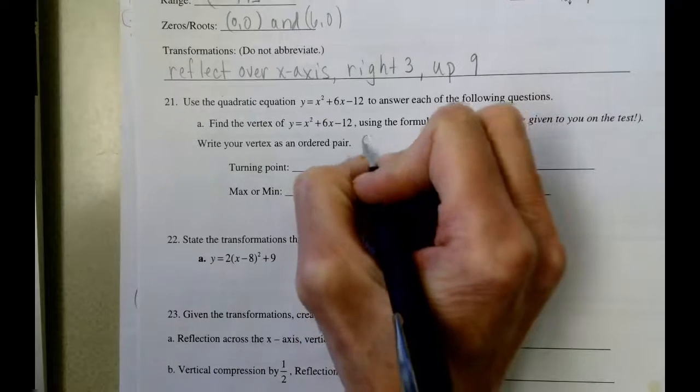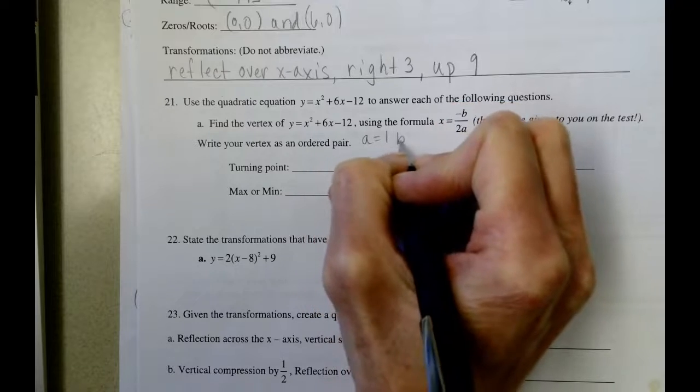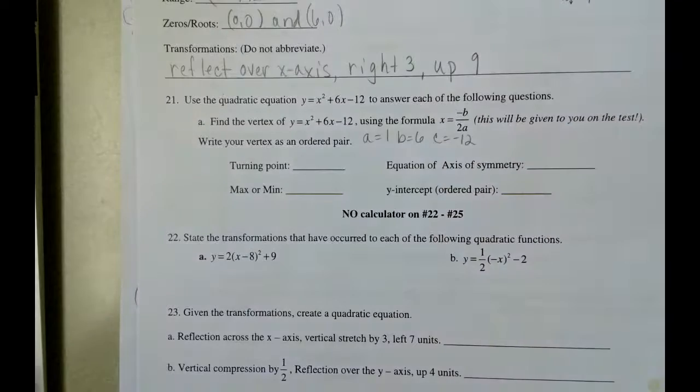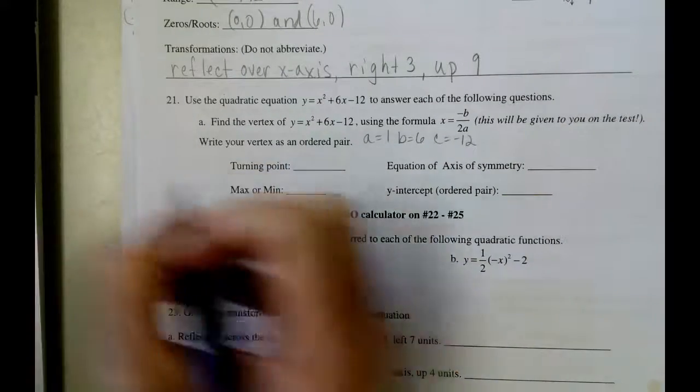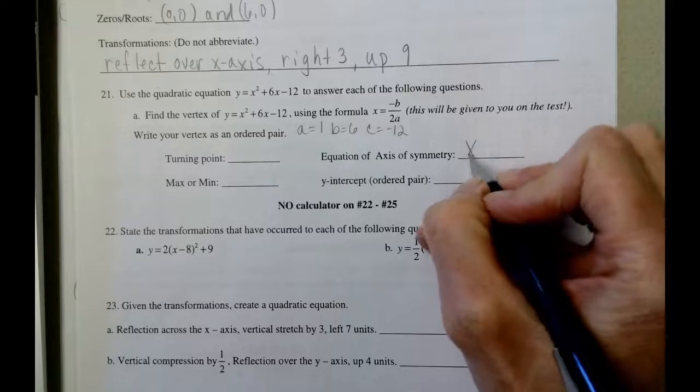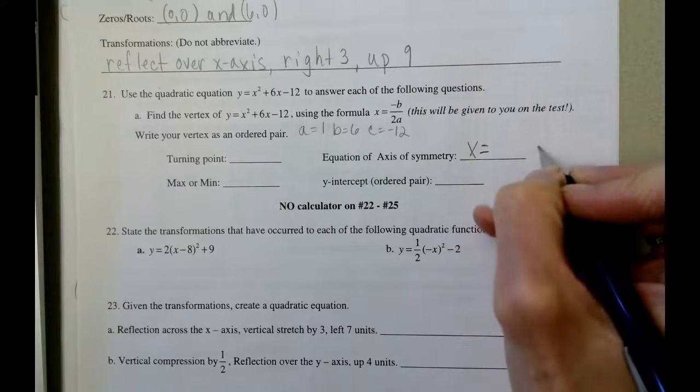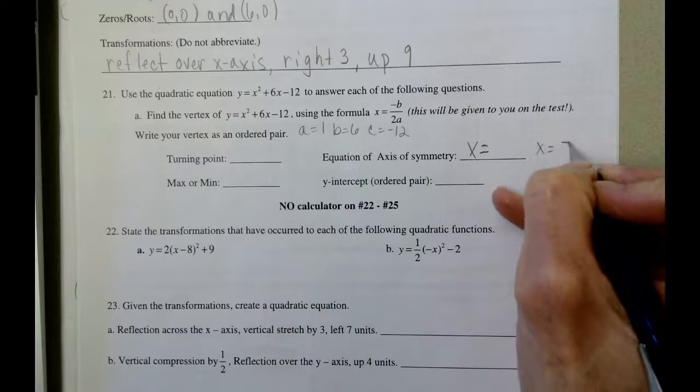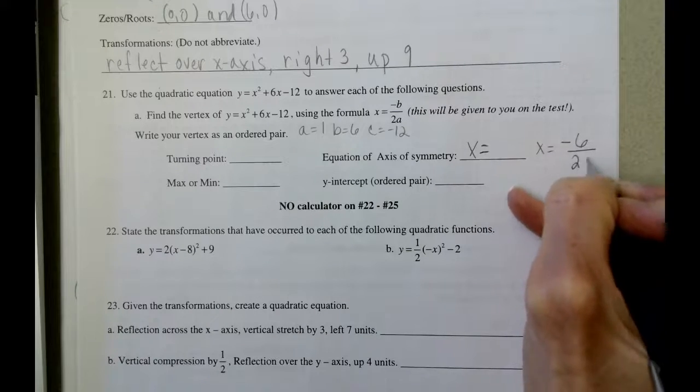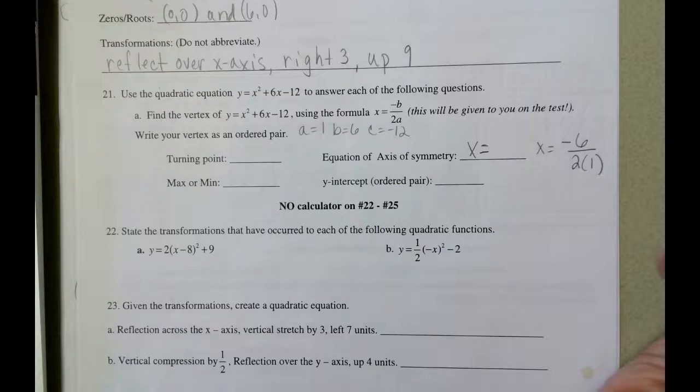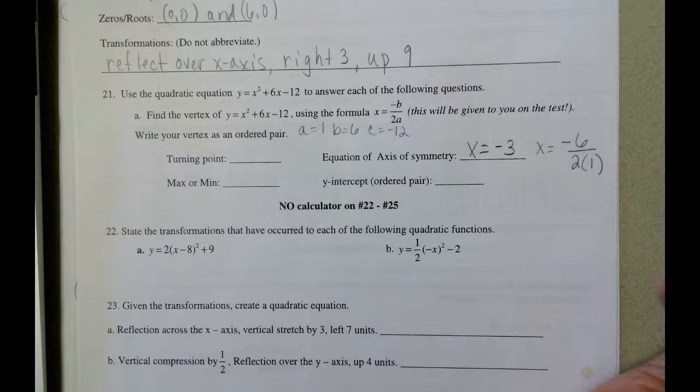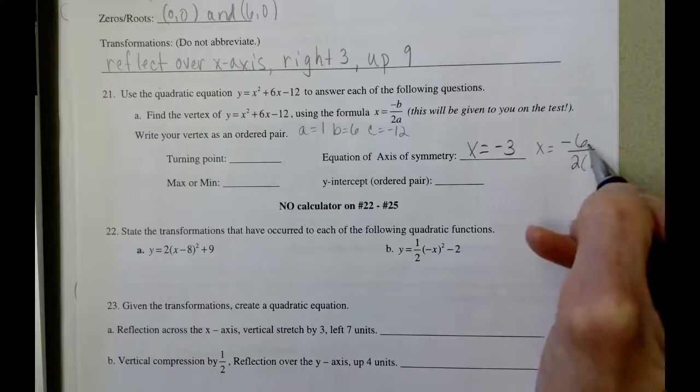So let's start with labeling a is 1, b is 6, and c is negative 12. So when we fill this in, I'm going to write it over here by the axis of symmetry because this is going to end up to be x equals. So x equals negative 6 over 2 times 1. So negative 6 divided by 2 is negative 3. Type it in your calculator if you need to. I did negative 6 divided by 2.